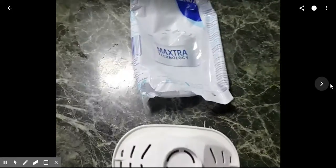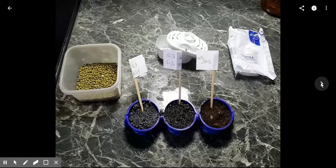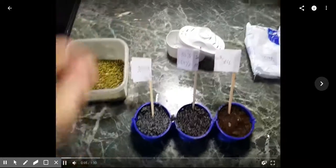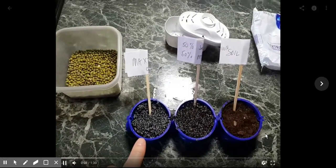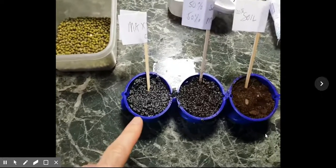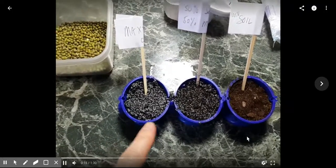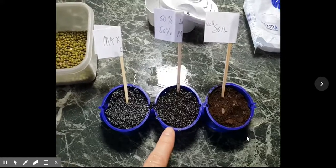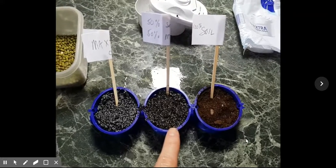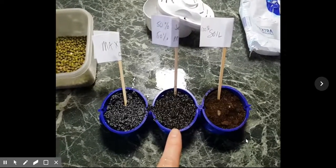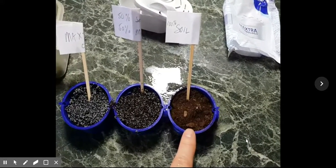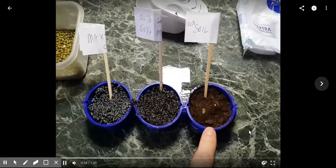This is a Maxtra filter. Okay, so what we have here are three pots. One is full of 100% Maxtra filter stuff, whatever it is. I think it's Perlite with activated carbon, I'm not sure. This is 50% Maxtra plus soil, so it's half-half. I mixed it not by weight, by volume, and this is regular potting soil of no particular brand.